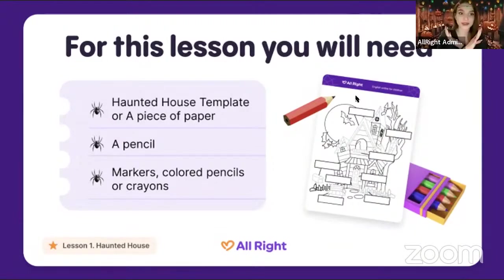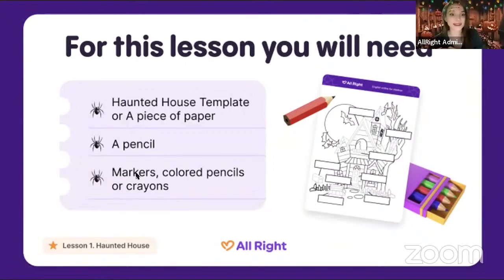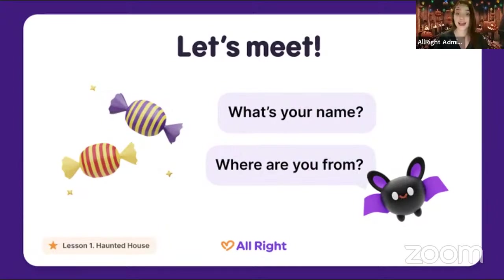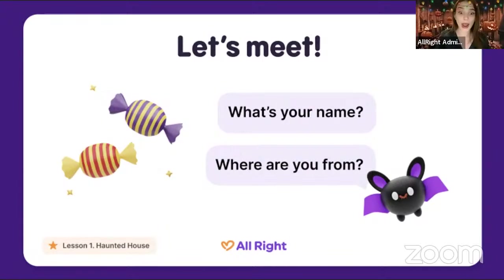Yes or no — if you don't have the template, you can take a piece of paper to draw. You also need a pencil, and of course you can use markers, colored pencils, or crayons. Now the first question: what is your name? My name is Olena. I can see some students from Romania — hello! Hi Maria, hi Misha, hi Sophia, hi Zahar. Where are you from? Are you from Ukraine, Poland, Romania? Hi Polina from Ukraine, nice to see you!